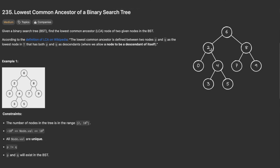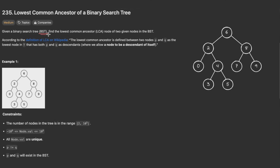For example, if we take two and eight, the lowest common ancestor is six, because two and eight are located directly under the node with value six. If we take two and four, the lowest common ancestor is two, since two can be a descendant of itself.